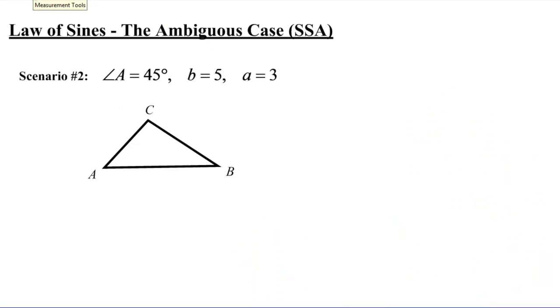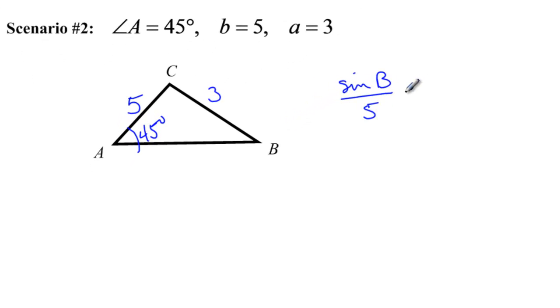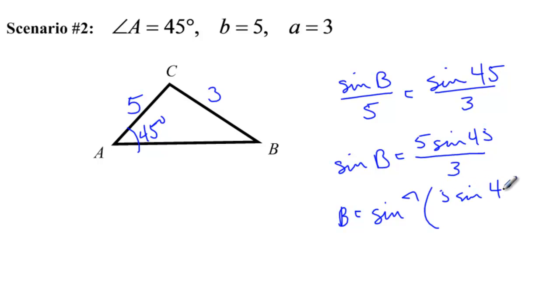Now if we go to the next scenario, and I draw in what we know, we know this is 45 degrees, we know this side is 5, and we know this side is 3. So I'm going to go ahead and set it up and say sine of B over 5 equals sine of 45 over 3. Cross multiply, and I get sine of B equals 5 sine 45 divided by 3.